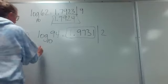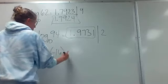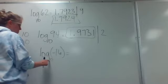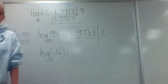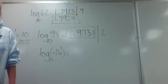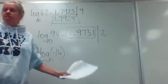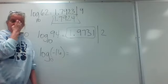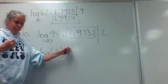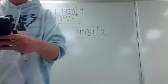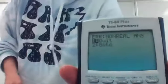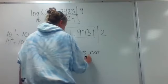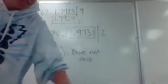Number 27: log of negative 16. If it's base 10, what power would I raise 10 to in order to get negative 16? You're not. You're not going to turn 10 into a negative number by raising it to an exponent — a negative exponent just flips it, a fraction exponent makes a radical. So log of negative 16 gives you a non-real answer.